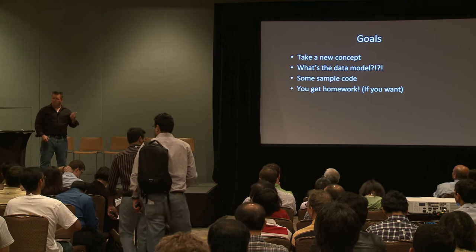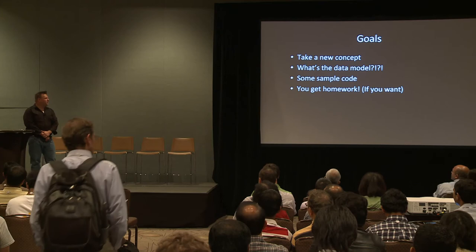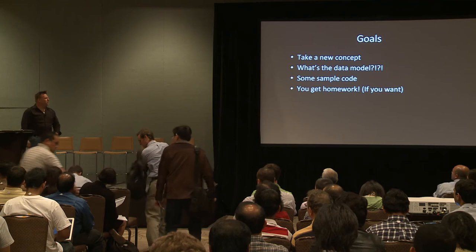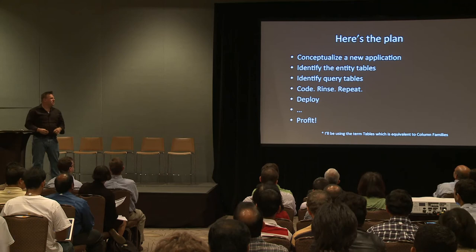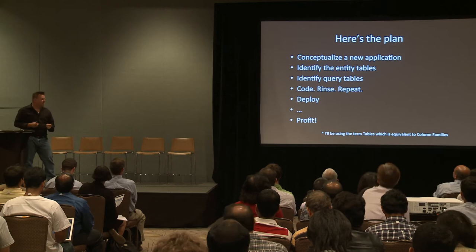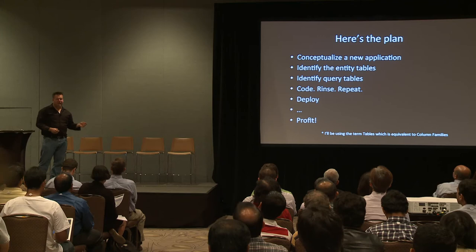I have some sample code in Java, and I have some homework for everybody — I used to teach at college so I can't get that out of my system. The homework is completely optional; I put the code up on GitHub. Here's what we're going to do: take a new application, have a whiteboard session, identify entity tables — that's one of the first things you do with a relational model — and then identify query tables, which is the new thing we're adding. We'll do some coding and get the minimum viable product out there, then do a deployment. Yes, I'm going to do this in 30 minutes.